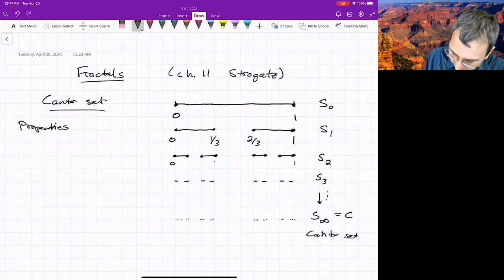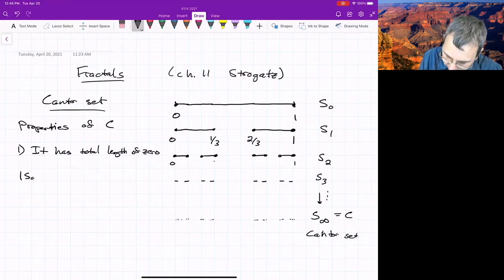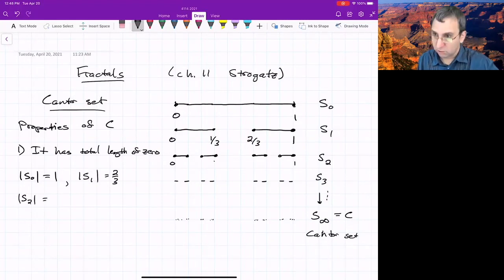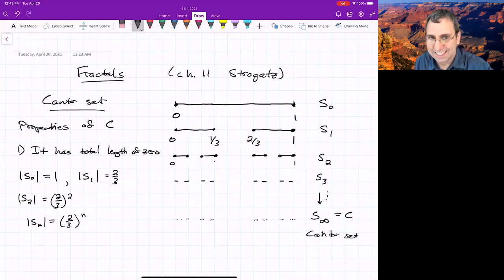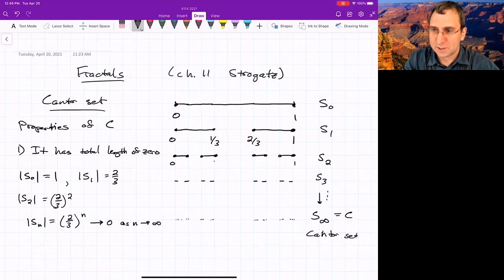But this does have some interesting properties. One thing is, it has a total length of zero. And how do we know that? Well, let's look at the length of the first iterate of this process. If I write it this way, that has length one. The next one, that's two segments, each of length one third. So it's two thirds. And then what is S2? We do this again. So we've got two thirds of two thirds. Then you could see maybe where this is going. The length of the Nth iterate in this process is two thirds to the N. And since that's less than one, this goes to zero as N goes to infinity. It has no length. You might say it has measure zero.